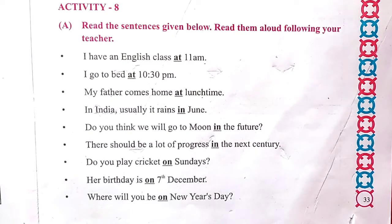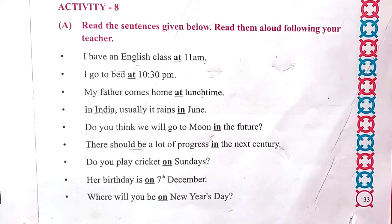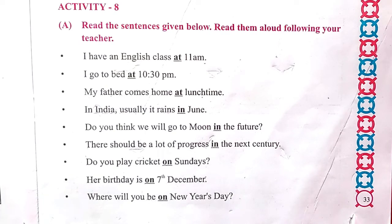You go in the kitchen — 'in' is used to show being inside something. 'On' is used for surfaces — for example, do you play cricket on Sundays? You sit on the bench, meaning on the surface of the bench. That's how 'on' is used.